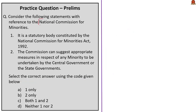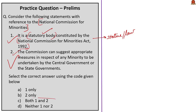The next question is about the National Commission for Minorities. Statement 1 — it is a statutory body constituted under the National Commission for Minorities Act of 1992 — is correct; it is statutory because it was established by an act of parliament, not by a constitutional provision. Statement 2 — the commission can suggest appropriate measures in respect of any minority to be undertaken by central or state governments — is correct; this is its main function. Both statements are correct, so the answer is option C: both 1 and 2.